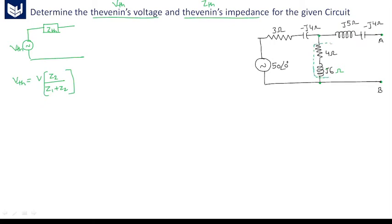if you consider this is Z2, this one is Z1, and this is Z3, then there is no current flowing across Z3. So Vth is the voltage appearing across these two terminals — that is simply the open circuit voltage across A and B, which is nothing but the voltage appearing across these two terminals.